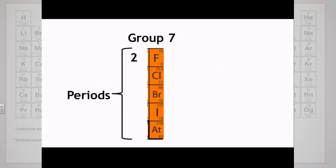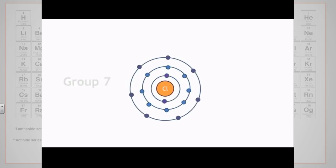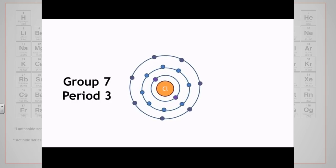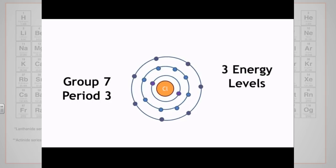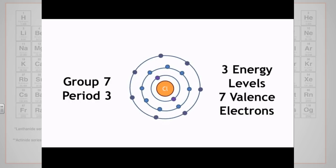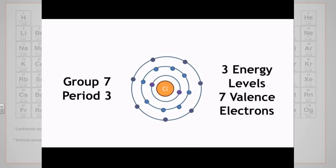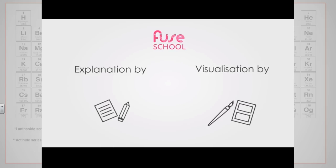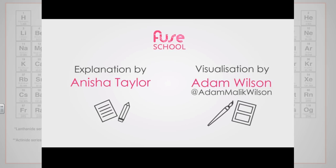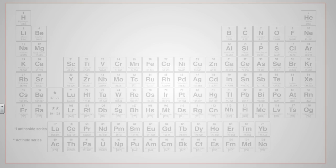Telling us that each element in this group has its outer electrons on a different shell. So chlorine is in group seven, period three. Therefore, it has three energy levels with seven electrons in its outermost shell.